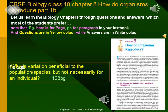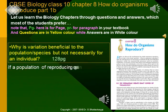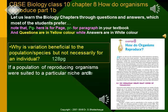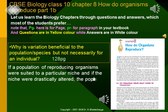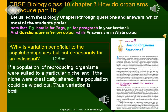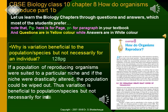Why is variation beneficial to the population or species, but not necessarily for an individual? If a population of reproducing organisms were suited to a particular niche, and if the niche were drastically altered, the population could be wiped out. Thus variation is beneficial to the population or species, but not necessarily for individuals.